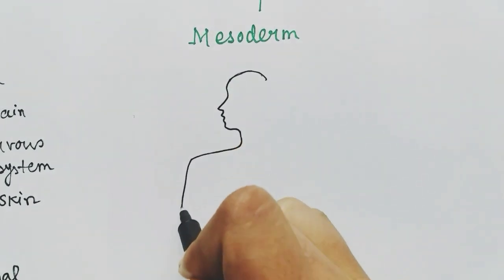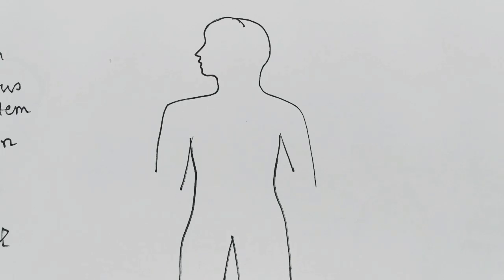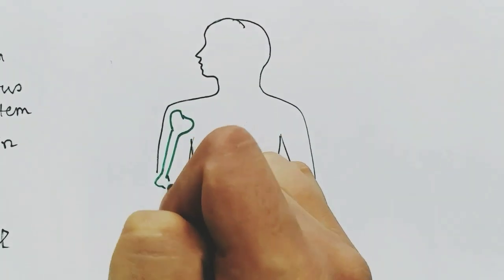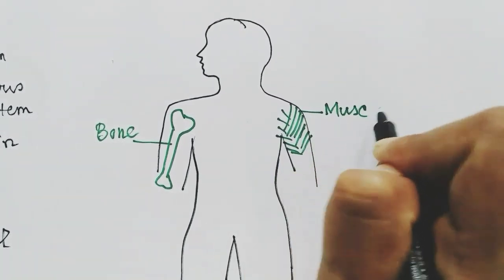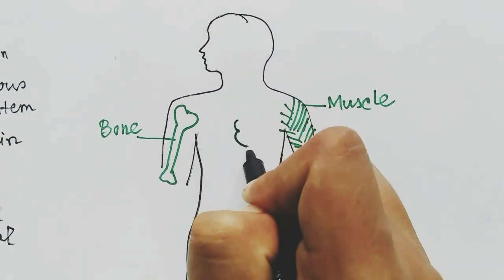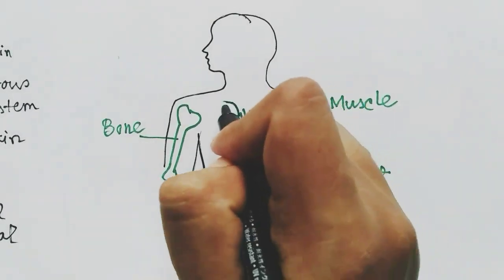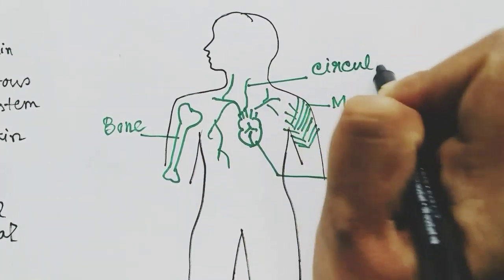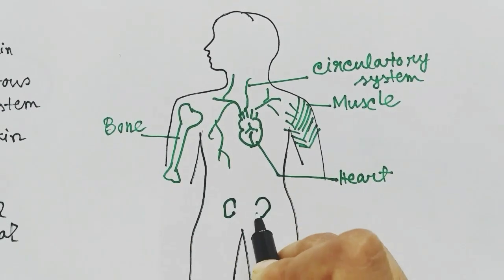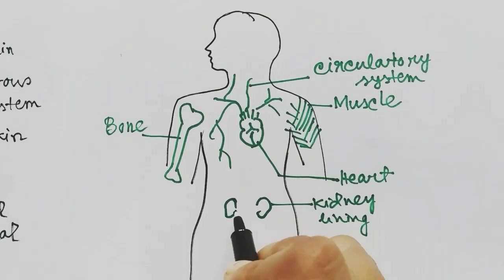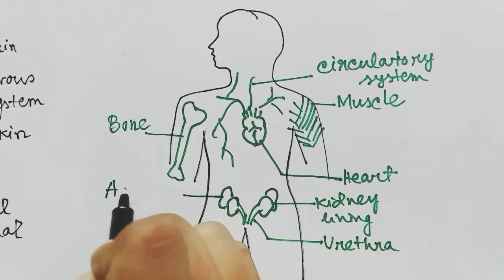The mesoderm will form the bones, the muscles of our body, the heart, the circulatory system, and the blood supply system of the body. The kidney lining, the urethra, and the adrenal cortex are also made by the mesoderm.